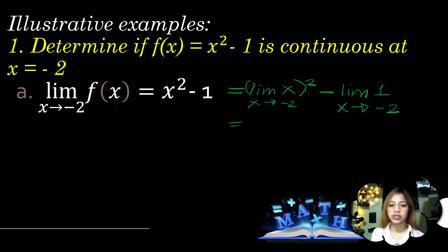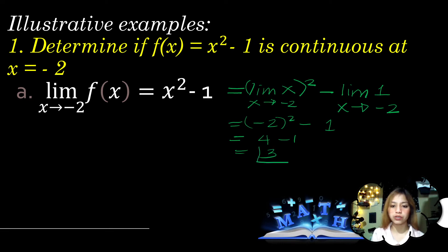The limit of x as x approaches -2 is equal to -2, then squared, minus the limit of 1 as x approaches -2 which equals 1. So (-2)² = 4, and 4 - 1 = 3. Since 3 is a defined value, it satisfies the first condition.